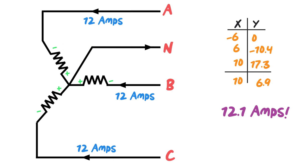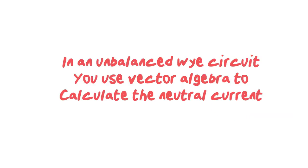With all these different currents coming in here to balance it out, the neutral needs to carry 12.1 amps. So in an unbalanced Y circuit you use the vector algebra to calculate your neutral current just like we used the vector algebra to prove that in a balanced circuit the neutral current will be 0.